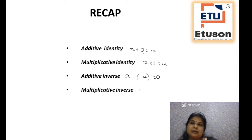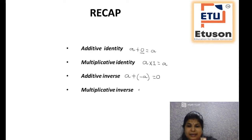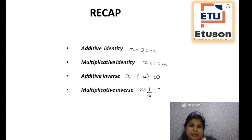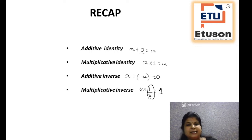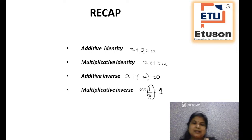What about multiplicative inverse? It is nothing but the reciprocal. If you multiply x into 1 by x, the answer is equal to 1. That is multiplicative inverse. So 1 by x is your multiplicative inverse of x. And if asked, what is the multiplicative inverse of 1 by x? It is x. All these things we have discussed in the previous class.